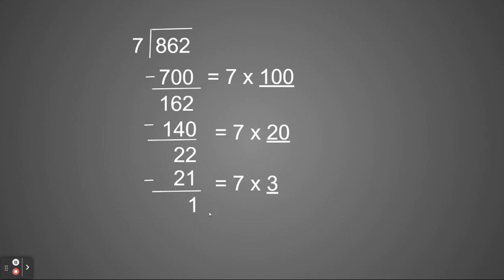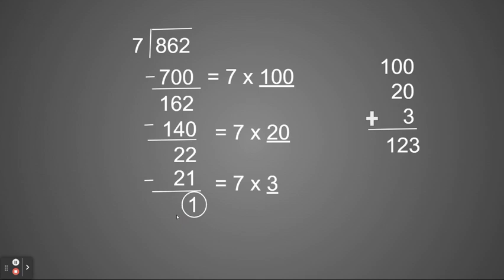So now there's nothing else I can take away — 1 is less than 7. So I'm going to add up the numbers that I was multiplying times 7 to get my total. I'm going to add 100 plus 20 plus 3 and get a grand total of 123. Now in this particular problem, I still had 1 left over. If I have anything left over, it will become a remainder. So the answer to 862 divided by 7 is 123 with a remainder of 1.